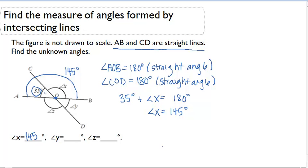Vertical angles are the ones that are formed by the intersecting lines, and they are opposite each other in the intersection. So 35 and angle Y are vertical angles, and X and Z are vertical angles. The important thing about vertical angles is that they are always congruent, meaning they have the same exact angle measurement.